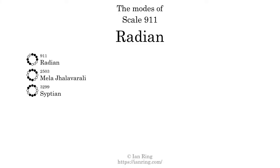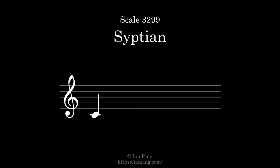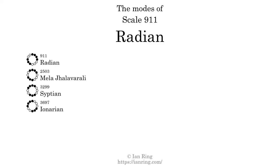The third mode is Scale 3299, also known as Ciption. It sounds like this. The fourth mode is Scale 3697, also known as Ionarion. It sounds like this.